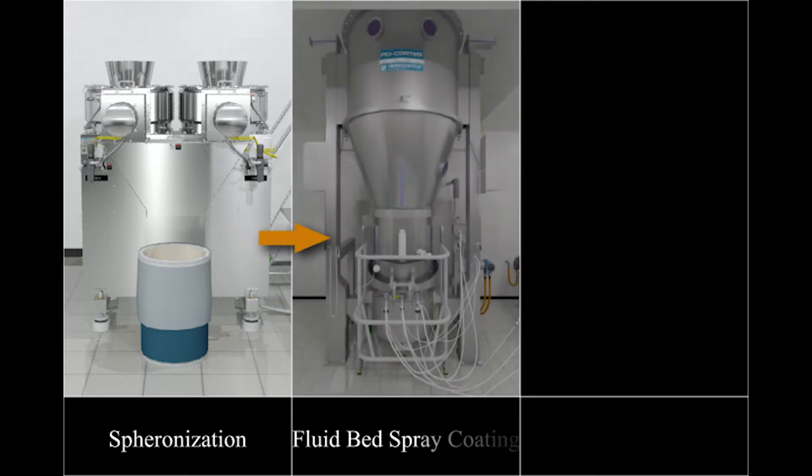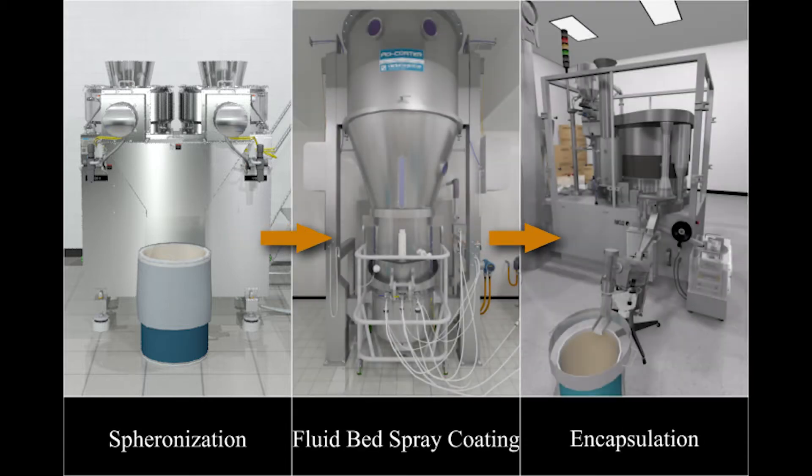For controlled release applications, extrusion precedes spheronization, where spherical granules are needed for subsequent pellet coating and encapsulation operations.